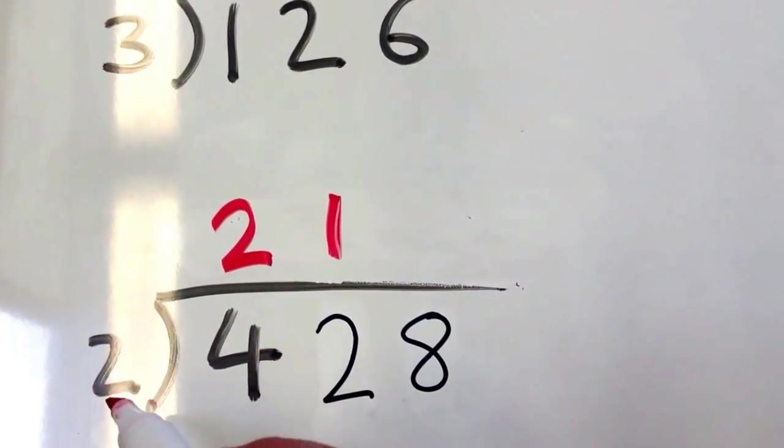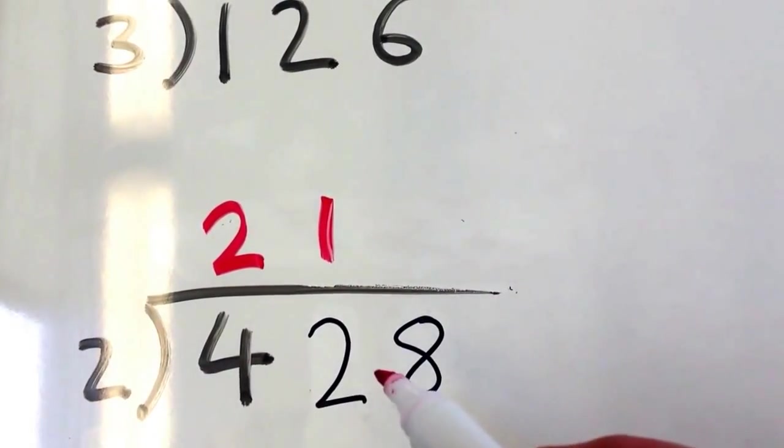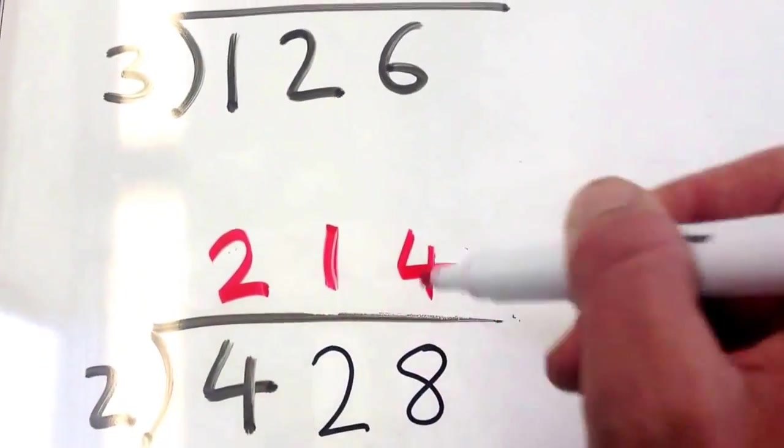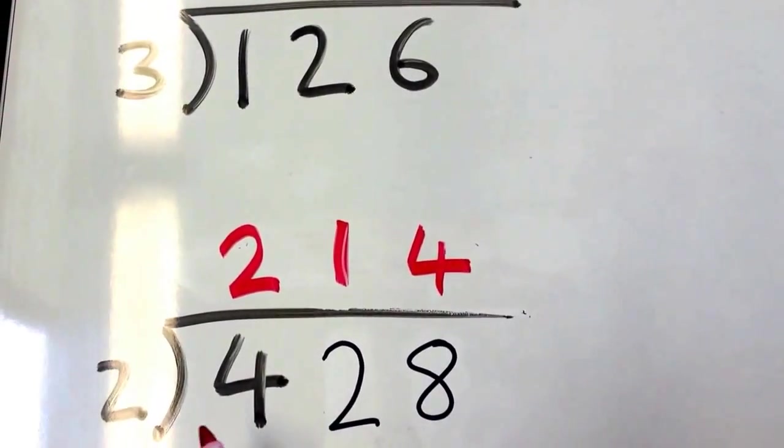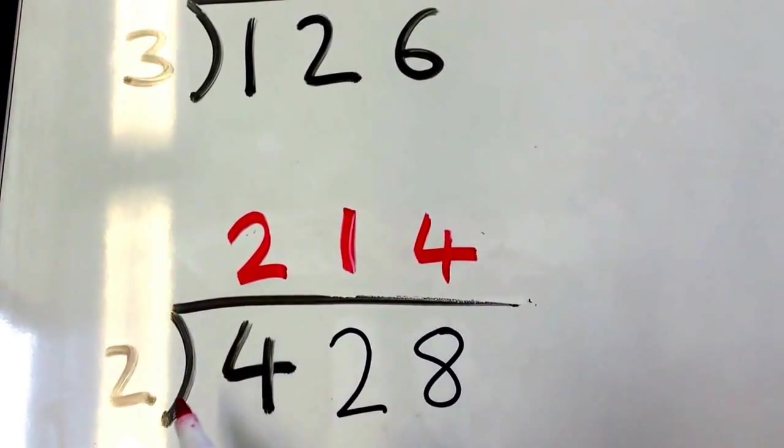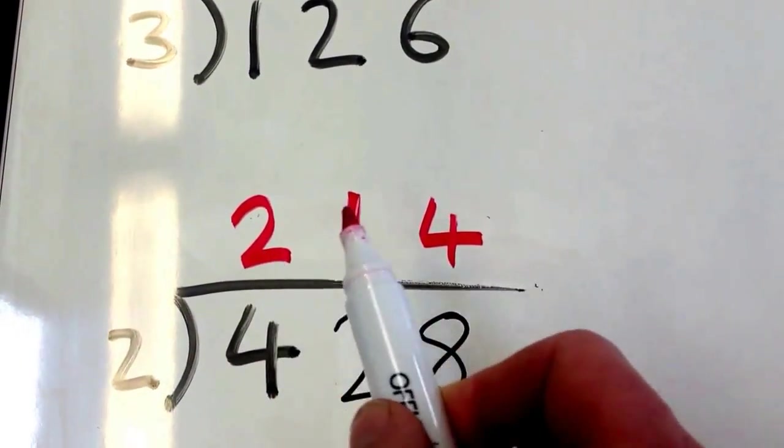And the last one here is how many times does 2 go into 8? Well, 2 goes into 8 four times. So the answer is 214. 428 divided by 2 is 214.